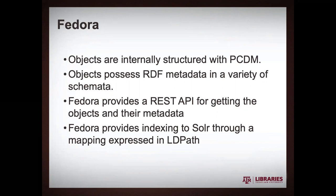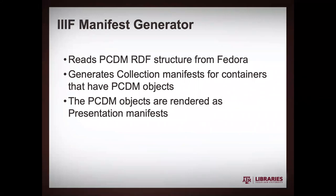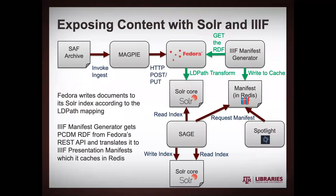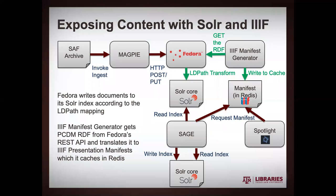The other piece of the puzzle is our IIIF manifest generator. This is another piece of software that will read the RDF out of Fedora. It will create a collection manifest for any container that has PCDM objects, and the objects themselves are going to get IIIF presentation manifests. Fedora invokes the LD Path transform to do the mapping of all the RDF metadata to the Solr core. The IIIF manifest generator gets the RDF out of Fedora, does its translation to IIIF JSON, and writes those manifests to its cache, which is a Redis cache.